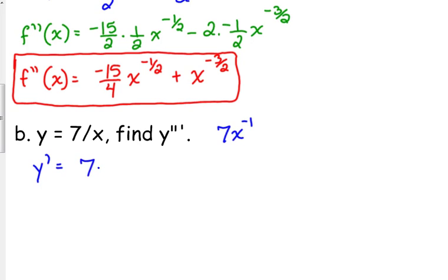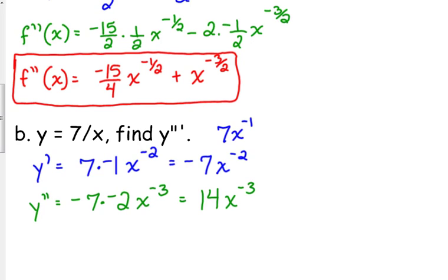So y prime is 7 times negative 1 x to the negative 2, which is negative 7x to the negative 2. Y double prime, negative 7 times negative 2 x to the negative 3, which is 14x to the negative 3.